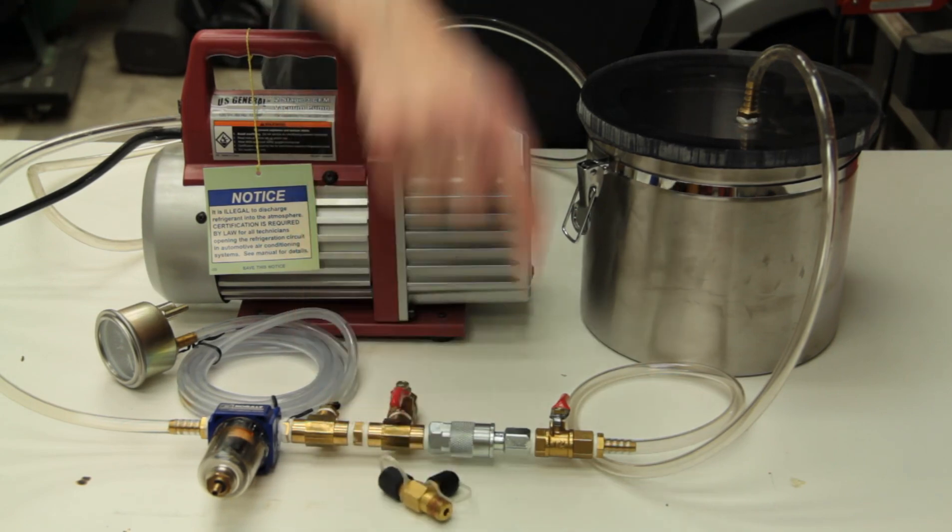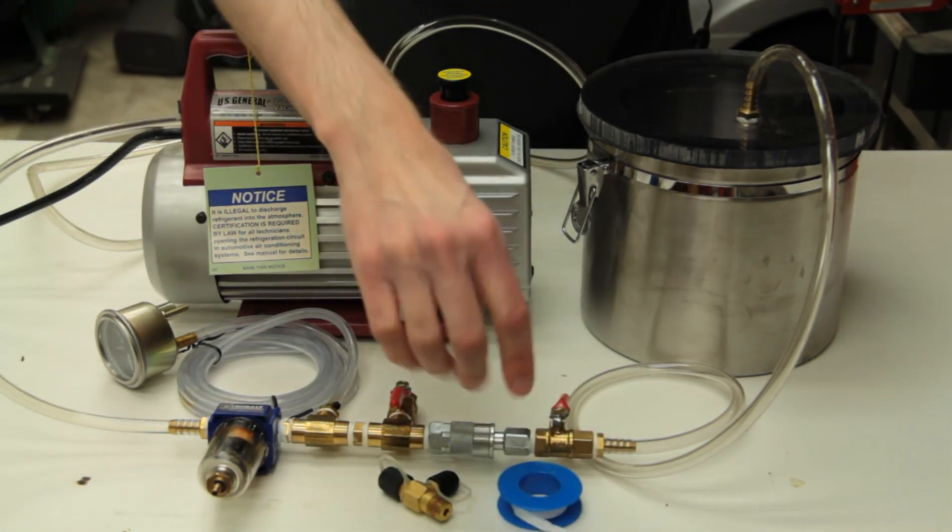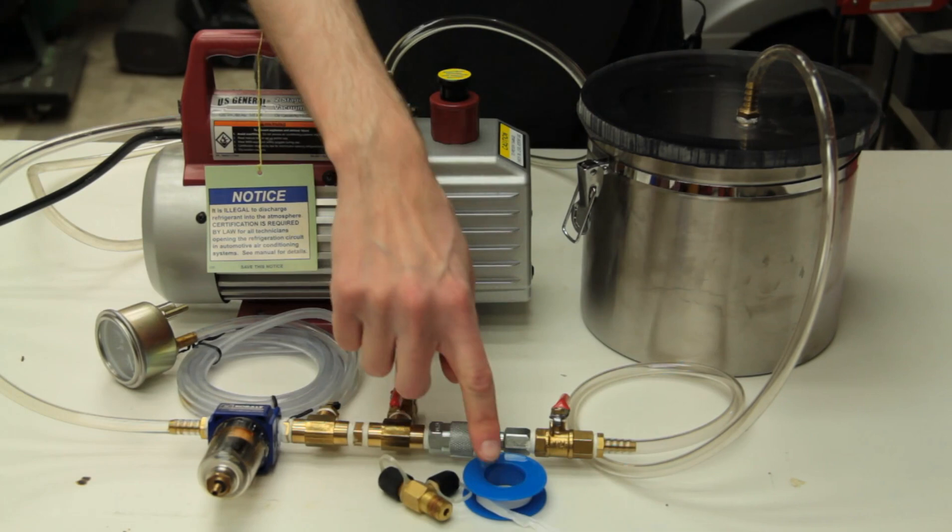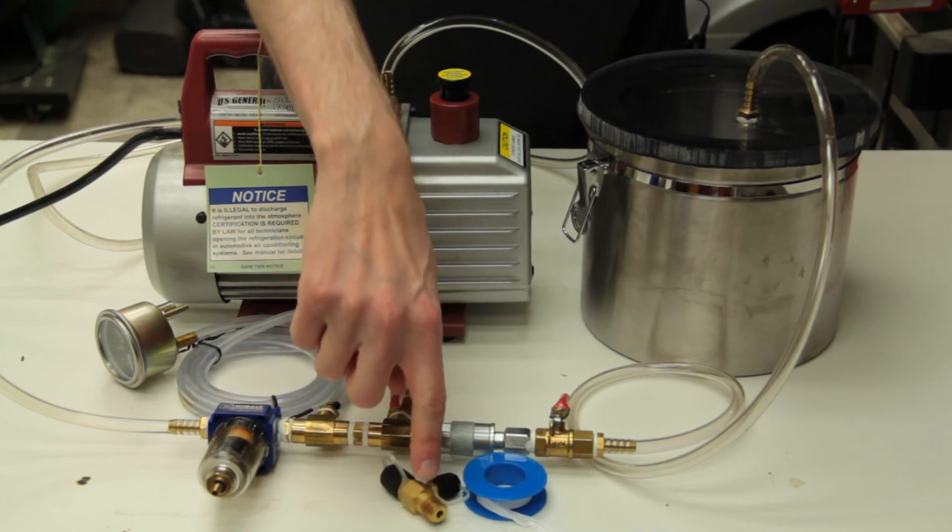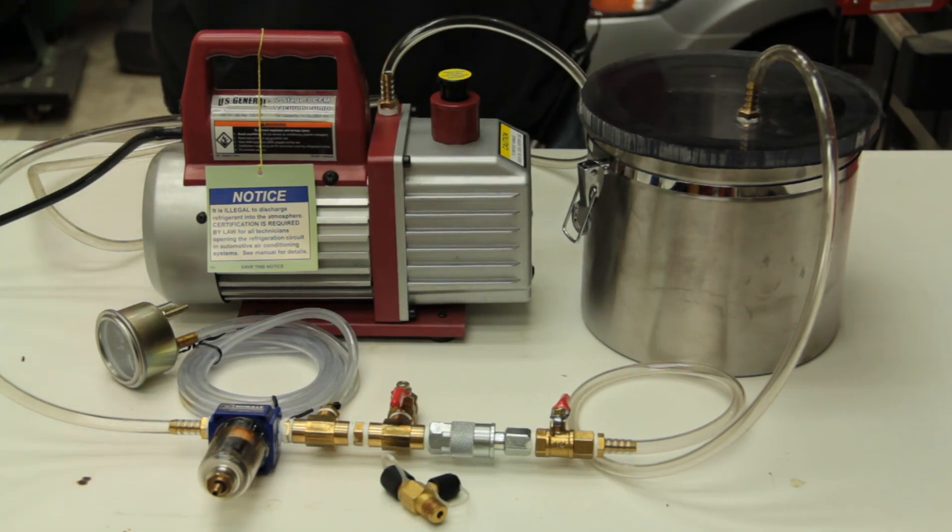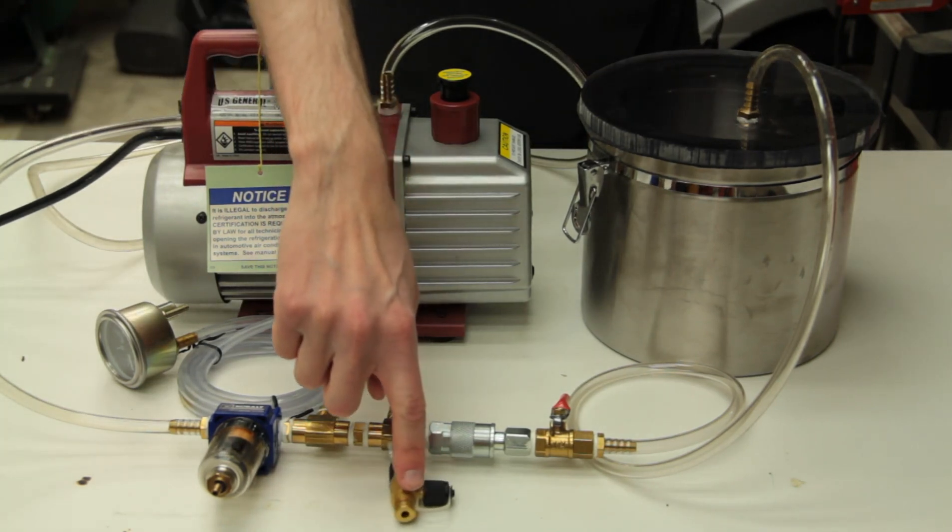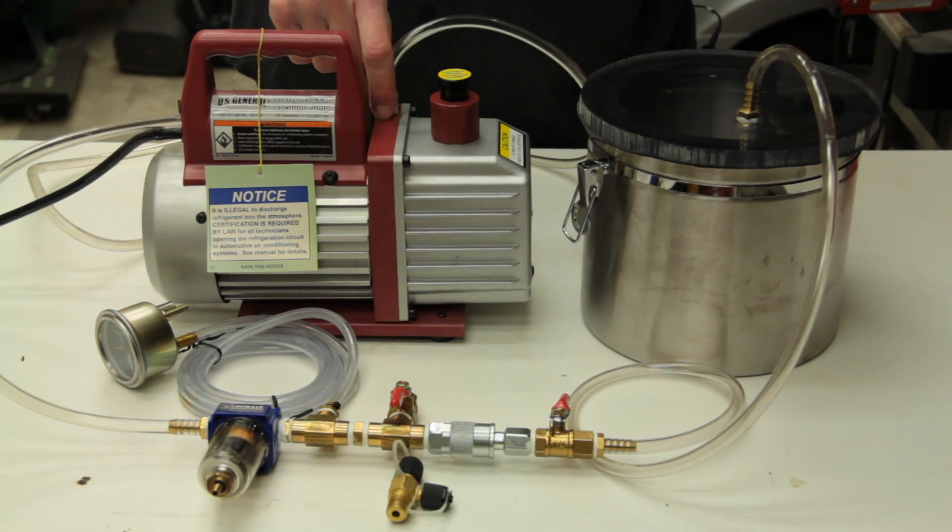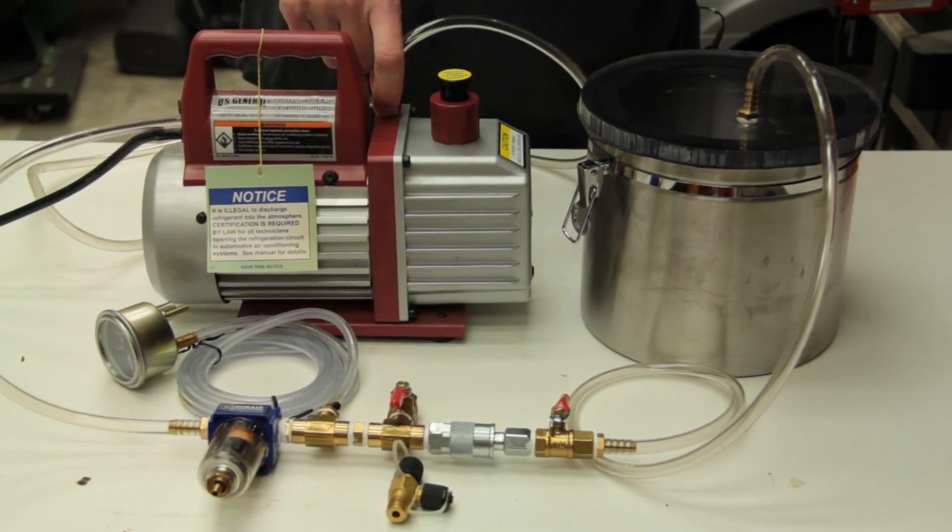Traditionally, you would put something like Teflon tape on the threads to both lubricate it so you can actually get it in tighter and to fill up some of the gaps. However, when these are mass produced, they actually put a glue or epoxy on here. So, it does prevent the air from coming out, but it makes it very difficult to remove.